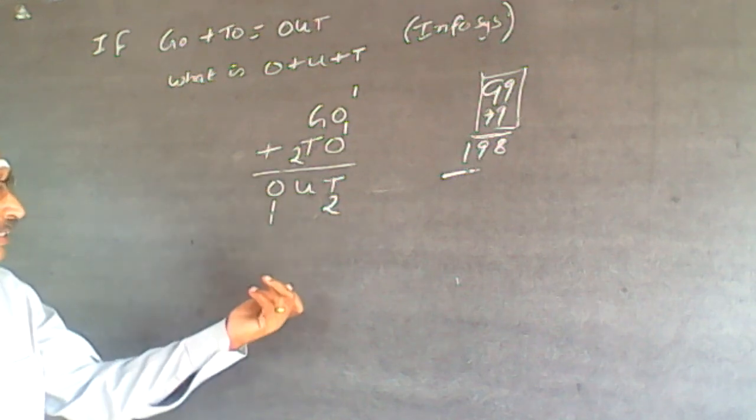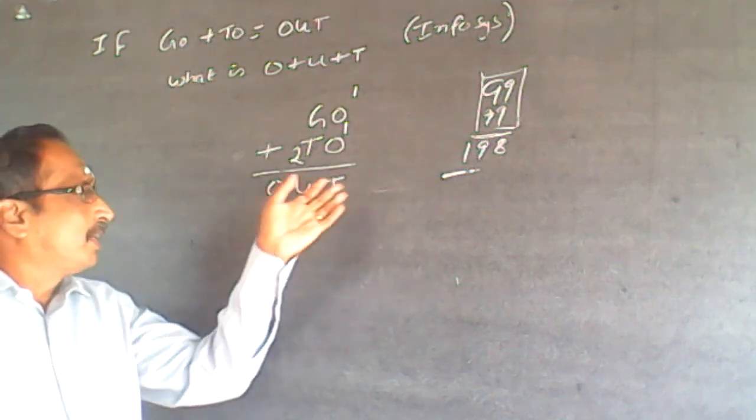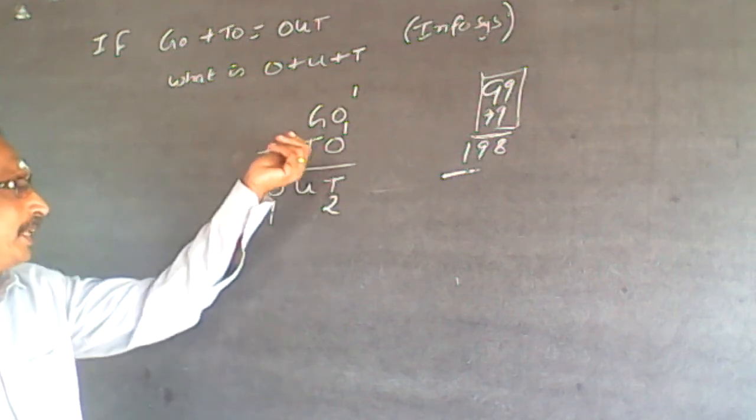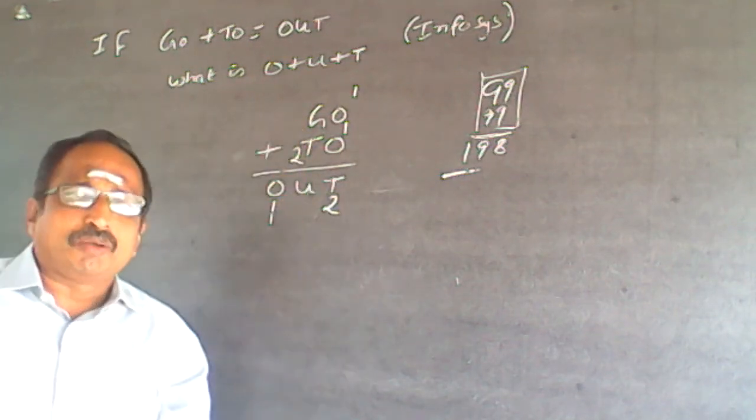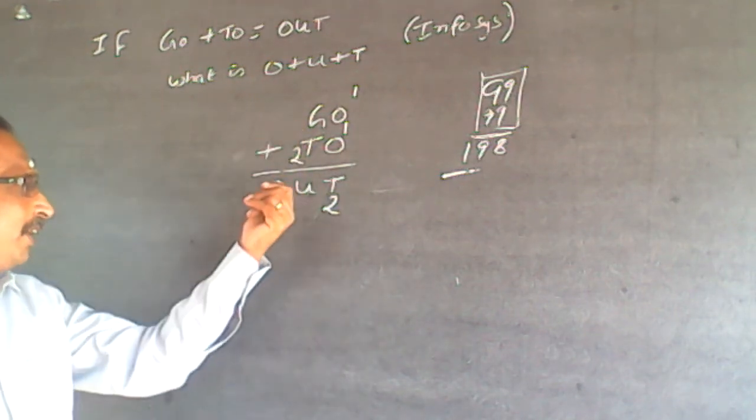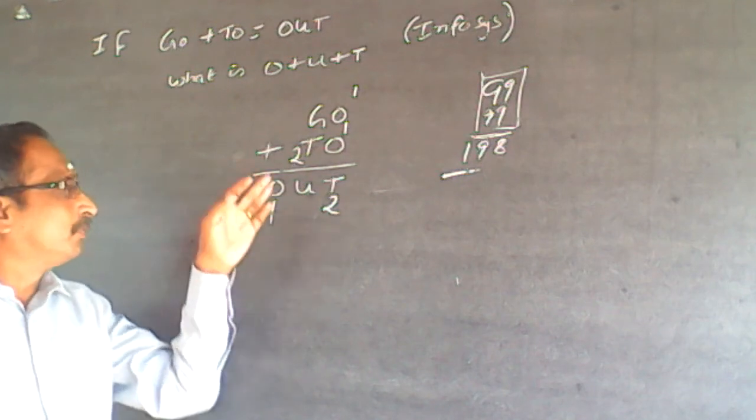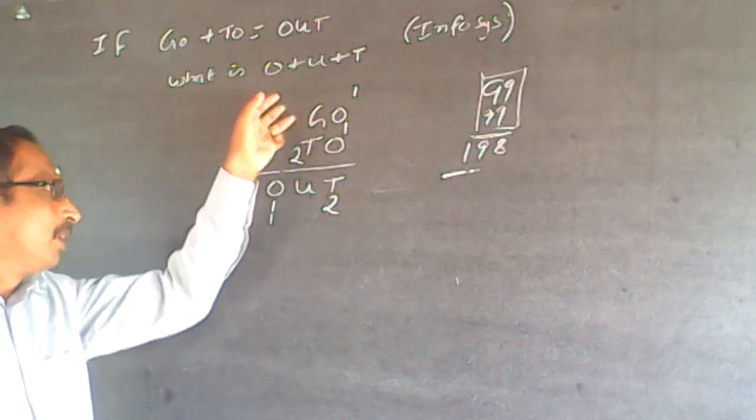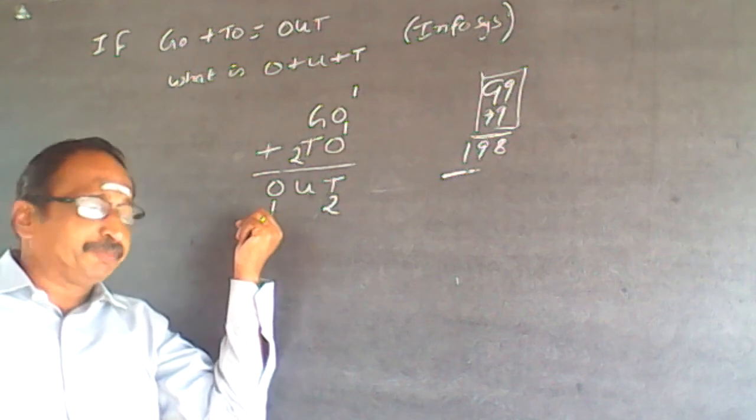So, if I am going to get a three-digit number, what will happen is here I will have to get T plus G or 2 plus G should be at least 10. Then only I can get a three-digit number. Because 2 plus G should have a carryover.